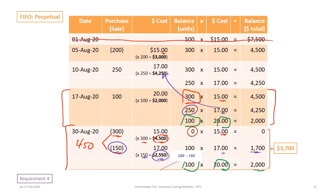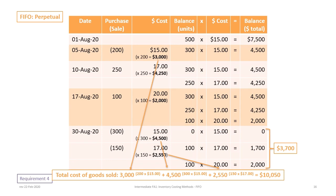After the August 30th sale, we have $3,700 of ending inventory: 100 units at $17 and 100 units at $20. We can now calculate our total cost of goods sold: the first sale was 200 units at $15 for $3,000; the second sale had 300 units at $15 for $4,500 plus 150 units at $17 for $2,550. That gives a total cost of goods sold of $10,050.